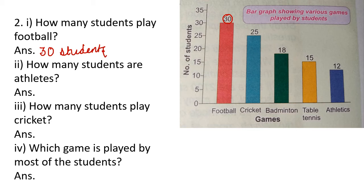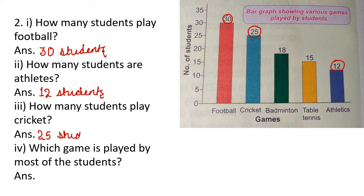How many students are athletes? As you can see for athletics, the number is 12, so 12 students. How many students play cricket? The bar shows 25, so 25 students. Which game is played by most of the students? The highest bar is for football with 30 students, so football is played by most of the students.